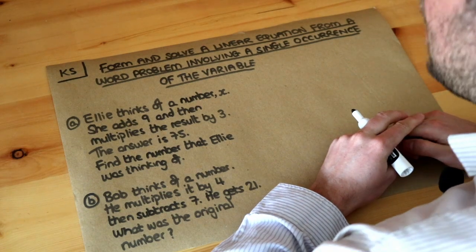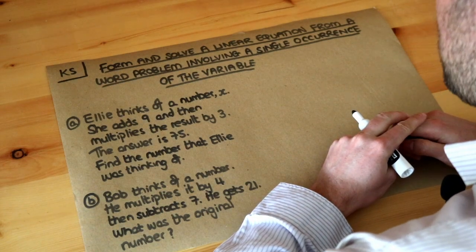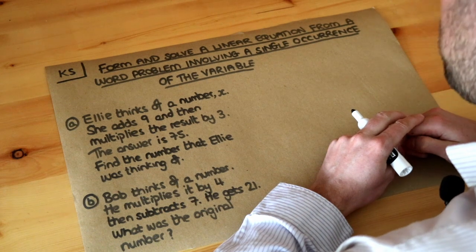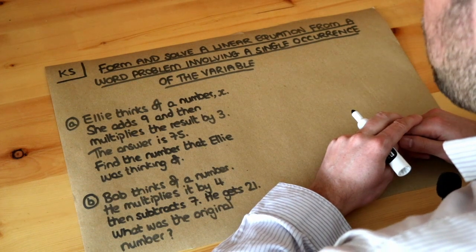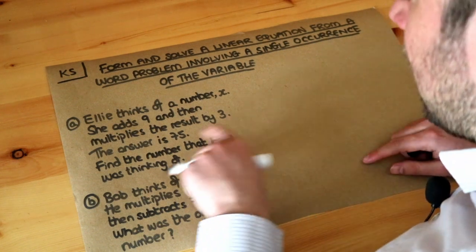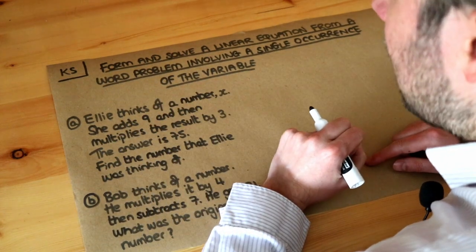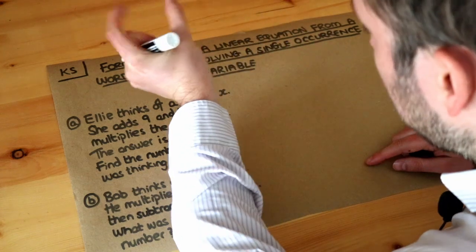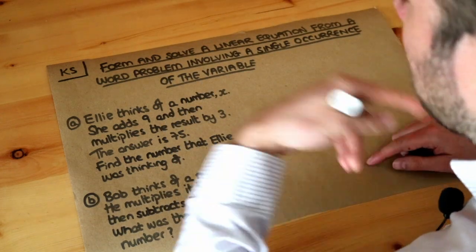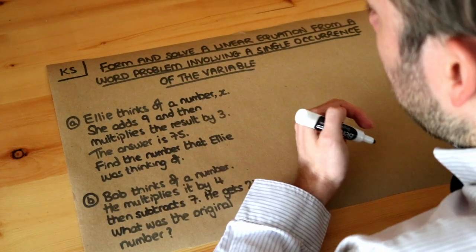Hello and welcome to this key skill video on forming and solving a linear equation from a word problem involving a single occurrence of a variable. We need to take this information and turn it into an equation. Remember, an equation is where you have something equals something, and then we can solve the equation to find the unknown value.